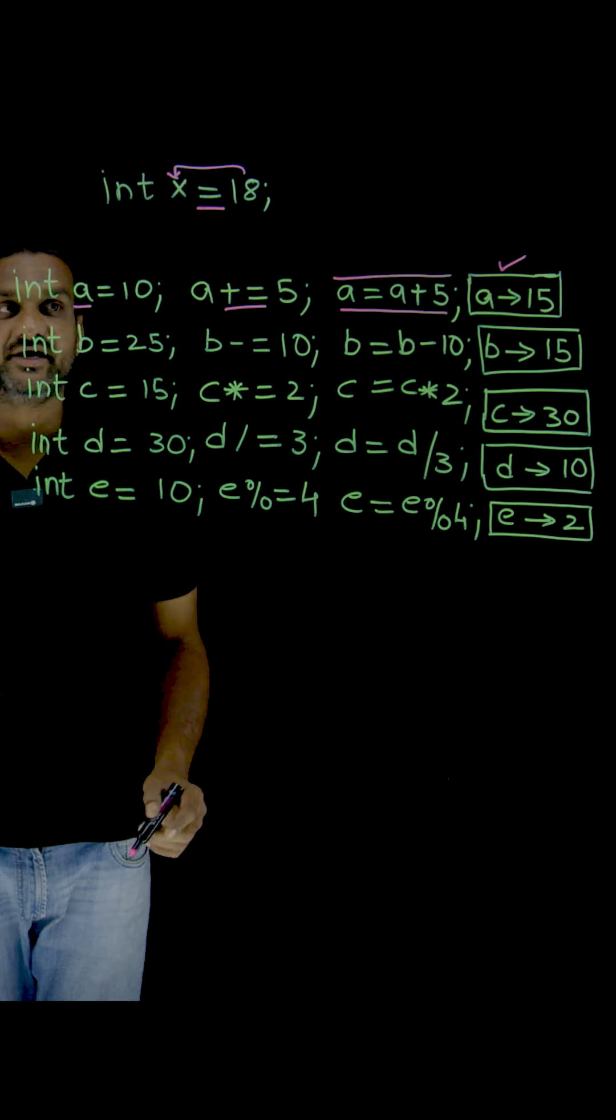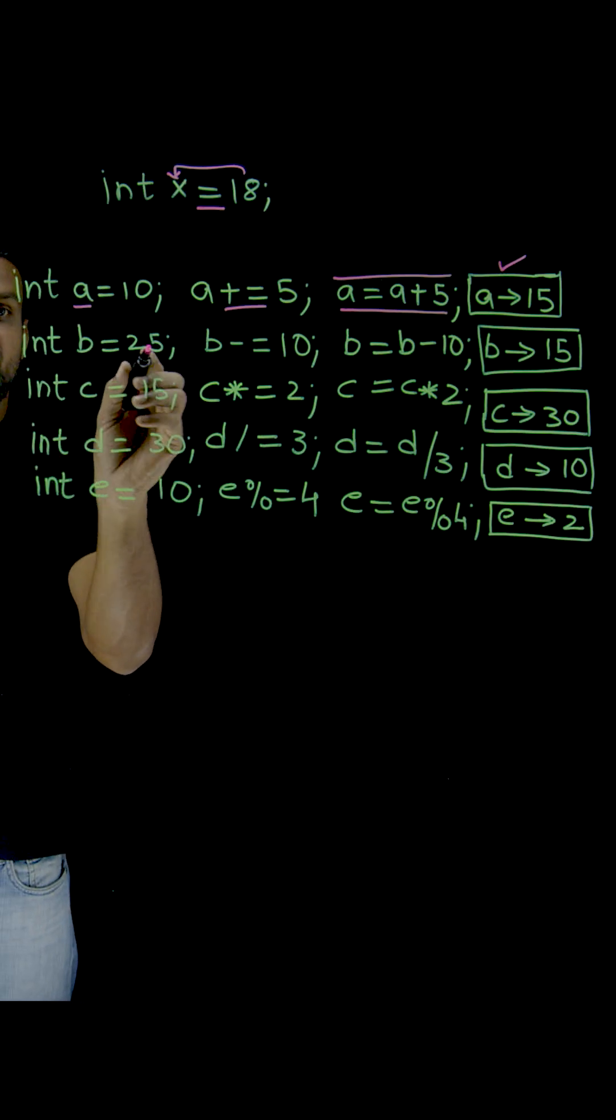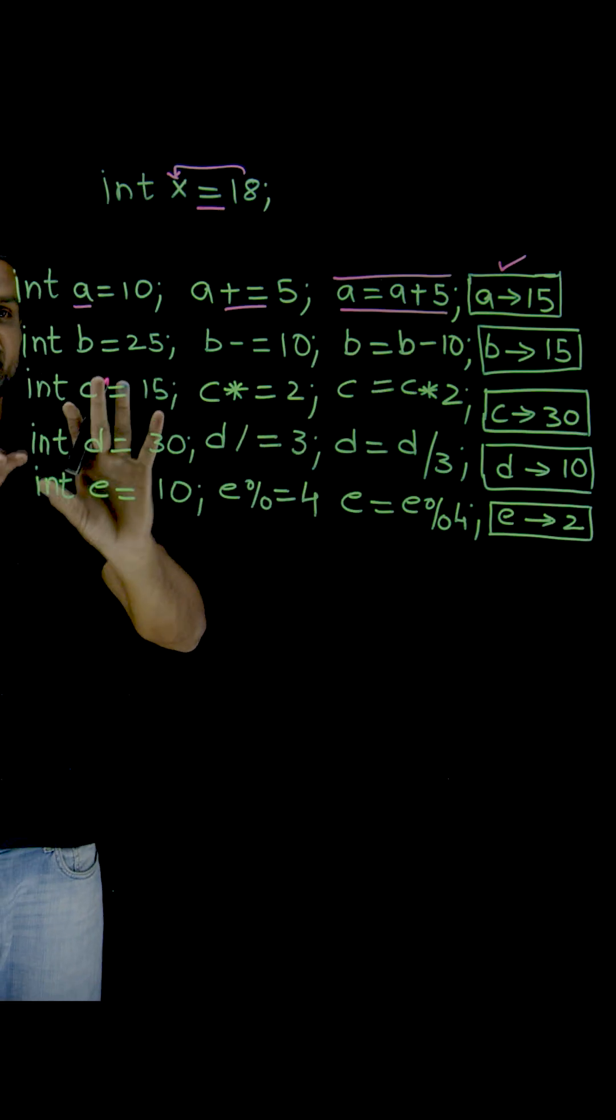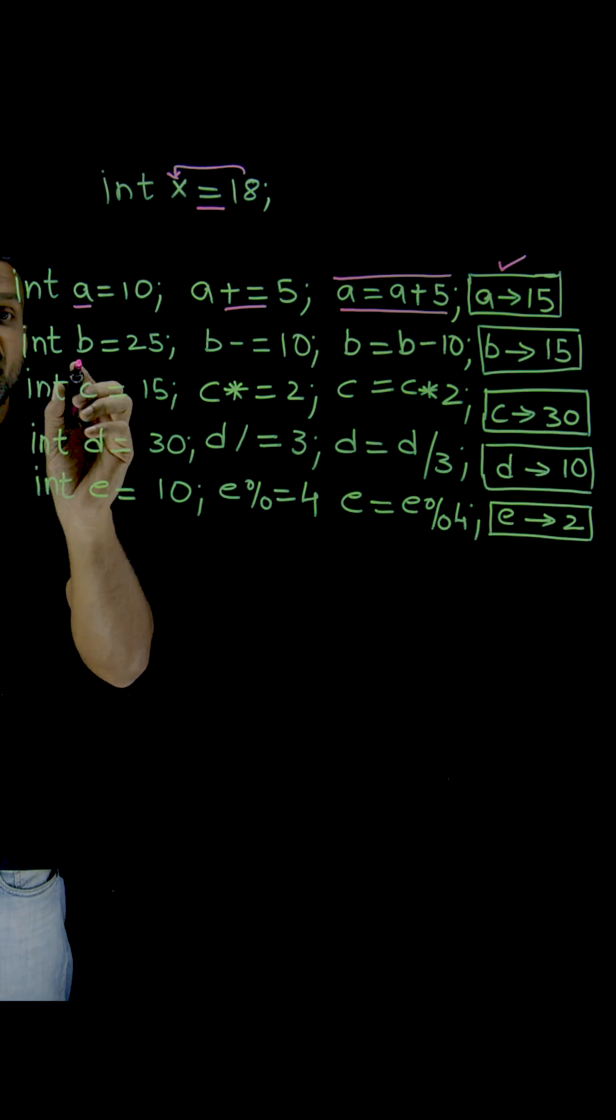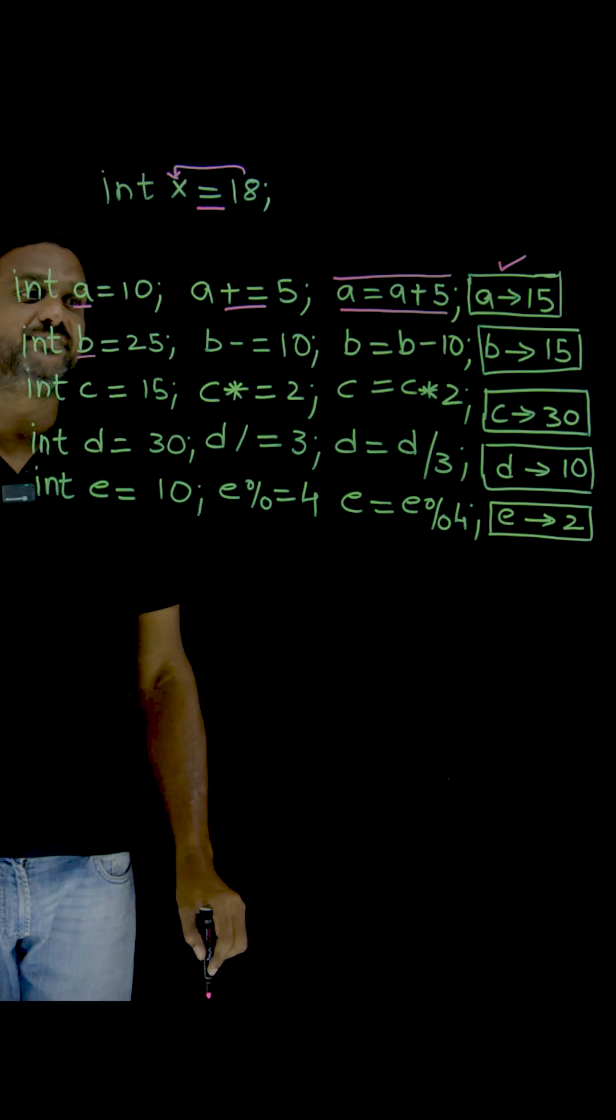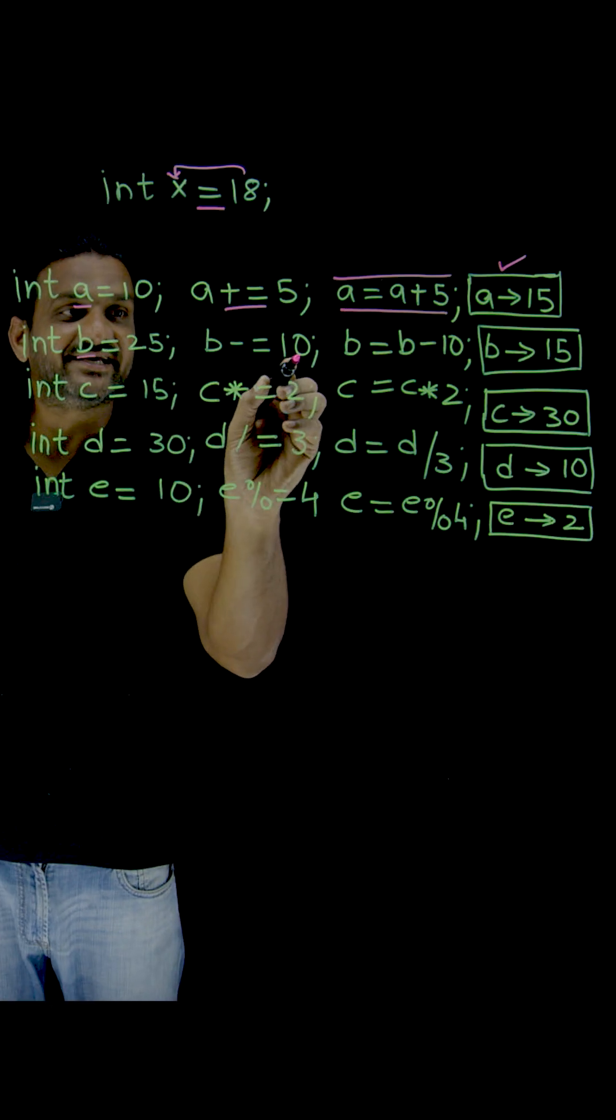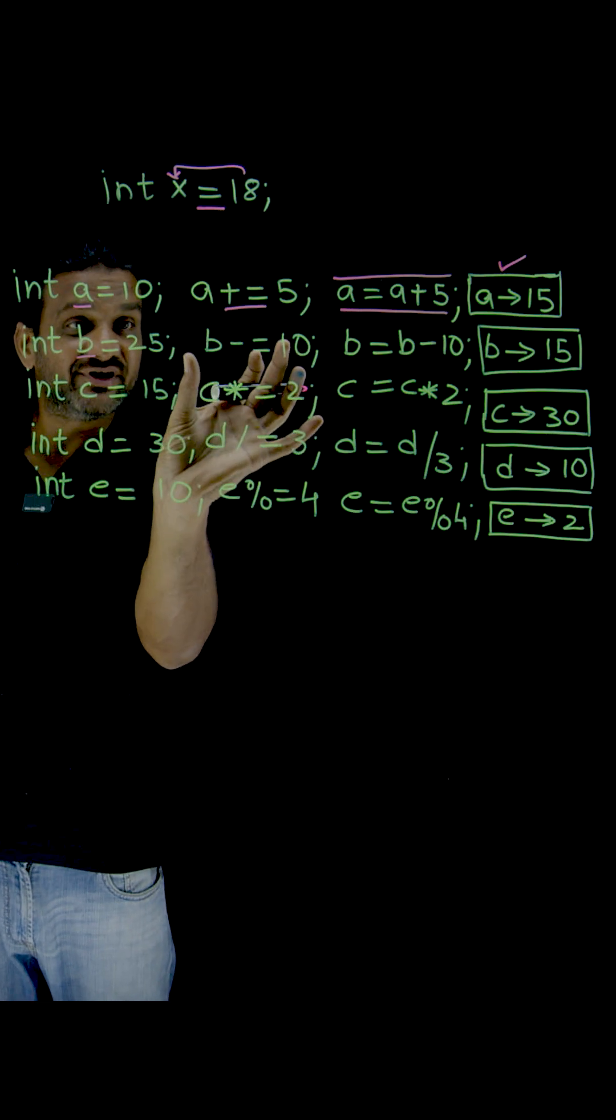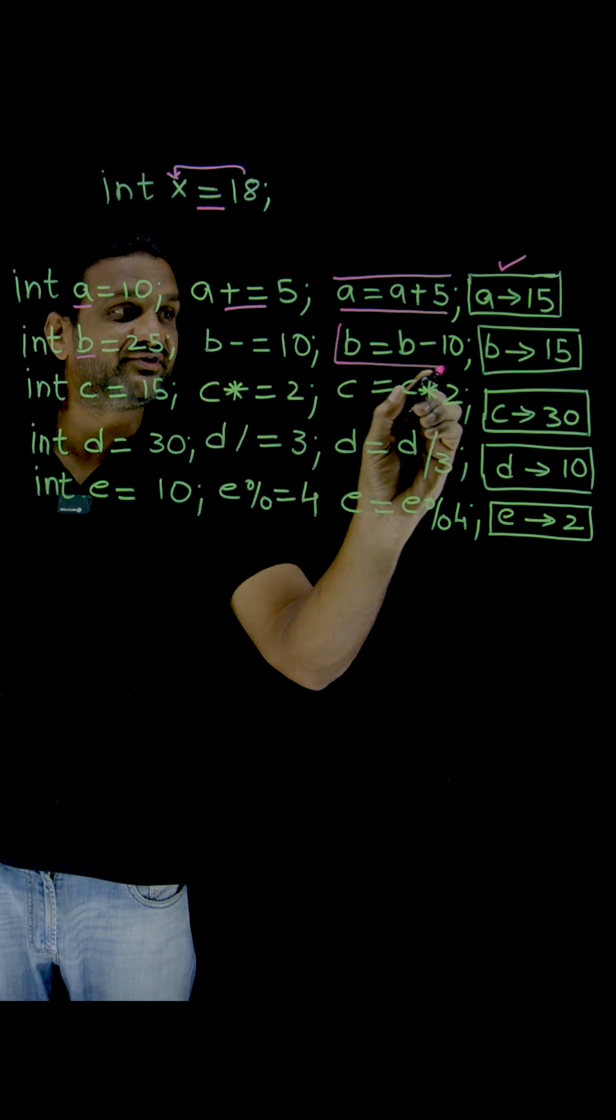Now the next line of code—these are not actual codes, I've just mentioned them in the form of code. Here I have taken an integer variable b and the value of that variable is 25. Now b minus equal to 10 (b -= 10). The equivalent expression for this is this one.